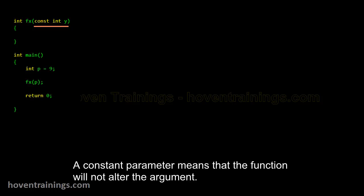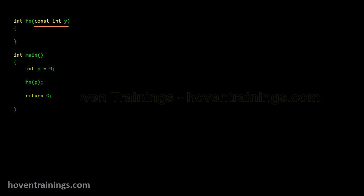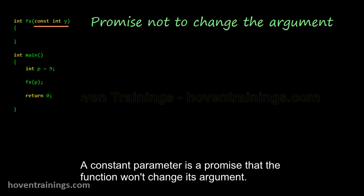A constant parameter means that the function will not alter the argument. A constant parameter is a promise that the function won't change its argument.